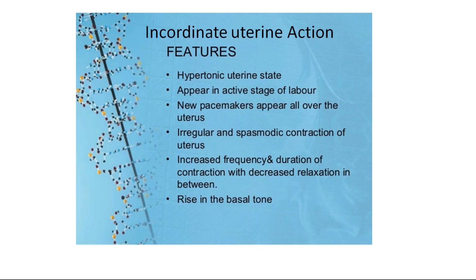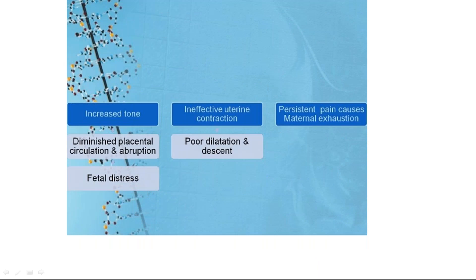Incoordinate uterine action is also a hypotonic uterine state that usually appears in the active stage of labor. The pacemakers appear all over the uterus, not just at the cornua. The normal physiological gradient of diminishing activity is disturbed, causing irregular spasmodic contractions of the uterus everywhere. There is increased frequency and duration of contractions but decreased relaxation in between, with a rise in the basal tone.